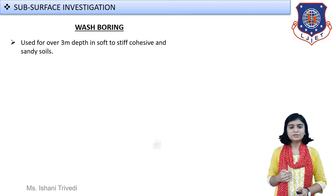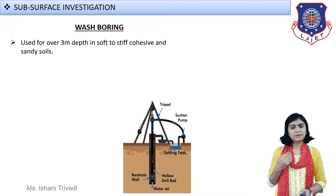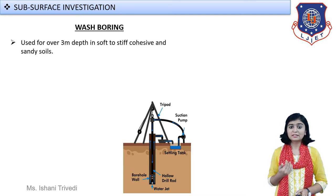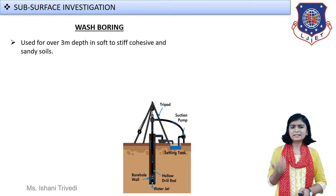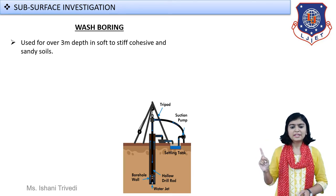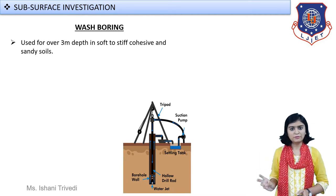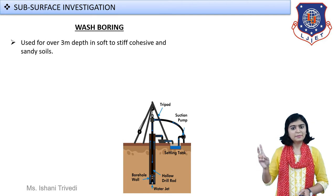Moving forward to the next type of boring — wash boring. You have seen that to extract groundwater when there is a shortage of portable drinking water, we generally perform boring and extract water from the groundwater table for human use. In this method, look at the picture: a perforated casing — a pipe with holes — is inserted into the ground. First, a borehole is created, and then the perforated casing is inserted.